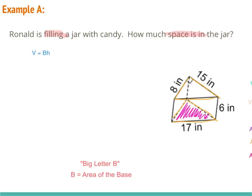If our shape had a square at the bottom we'd need the area formula for a square; if it was a rectangle, the rectangle formula, and so on. Since it's a triangle, the area formula is one-half little b times H. The bottom of the triangle is 8 and the height is 15. We know it's not the 17 because that's the hypotenuse — across from the right angle — which is neither the base nor the height. So we do one-half times 8 times 15, which gives us 60.